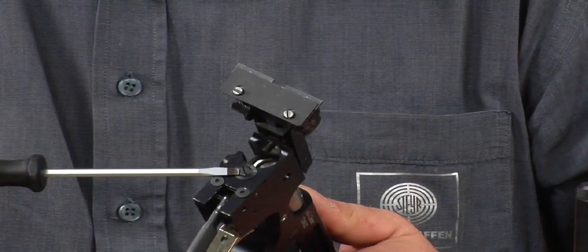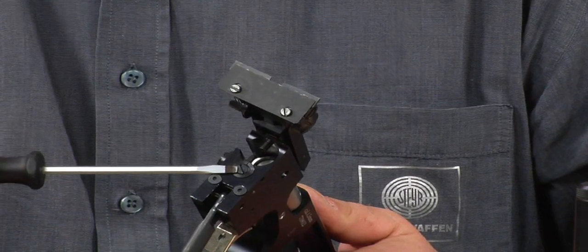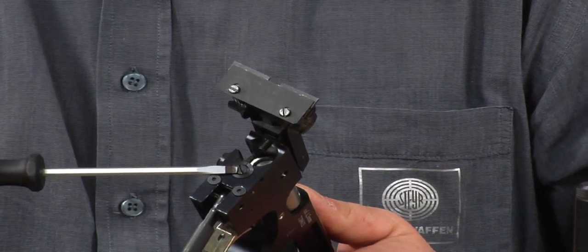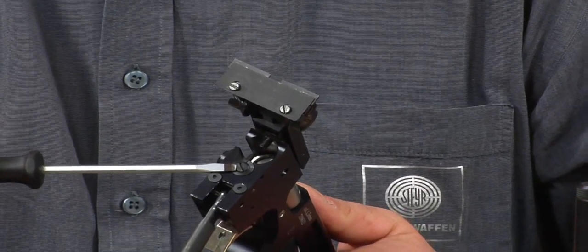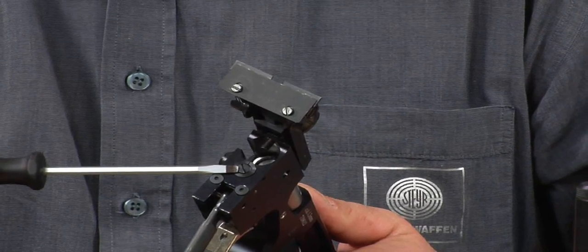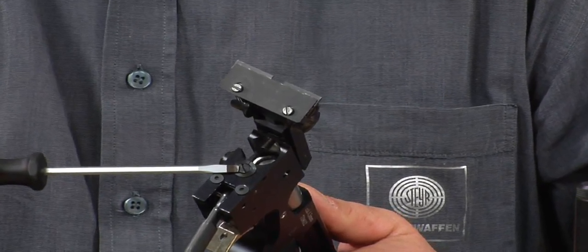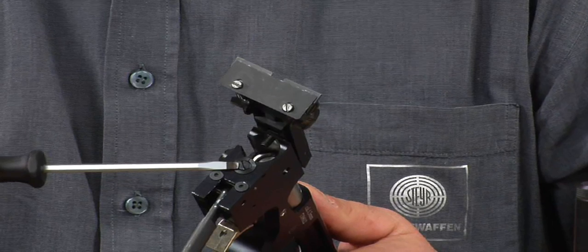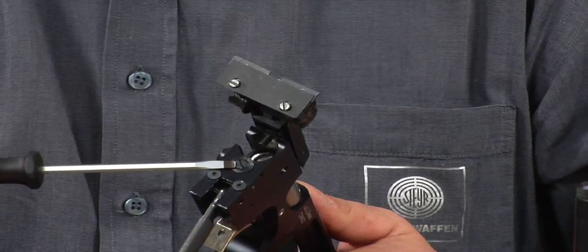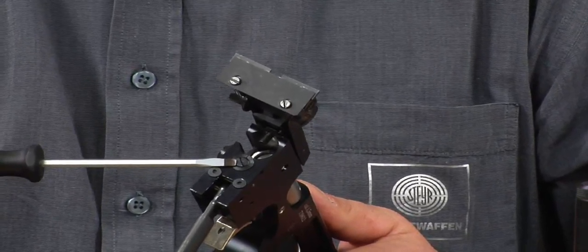By turning the slotted screw, also called the velocity screw, clockwise, this will increase the velocity. Anti-clockwise, it will reduce the velocity. Should there be problems making these adjustments with the original CO2 spring, you will need to change the pressure spring.